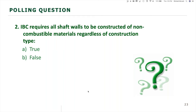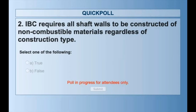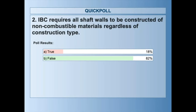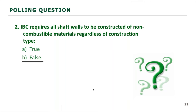Poll question: IBC requires all shaft walls to be constructed of non-combustible materials, regardless of construction type — true or false? The result: 82% false, 18% true. The real answer is false. Just reiterating that we can have wood frame shaft walls in Types 3, 4, and 5 buildings.